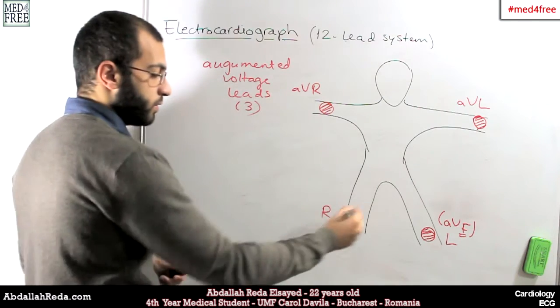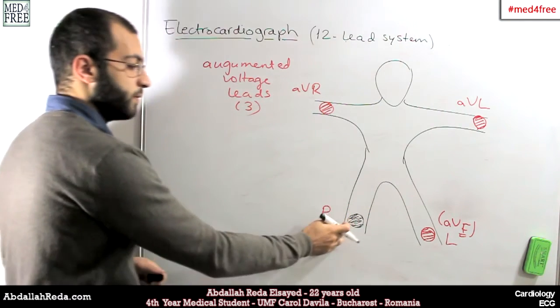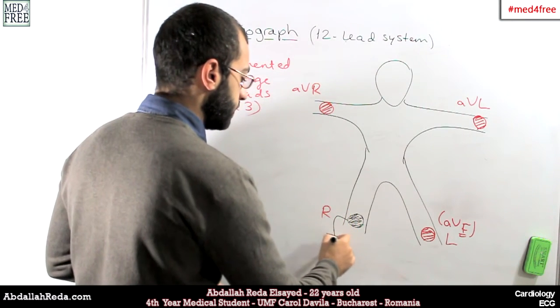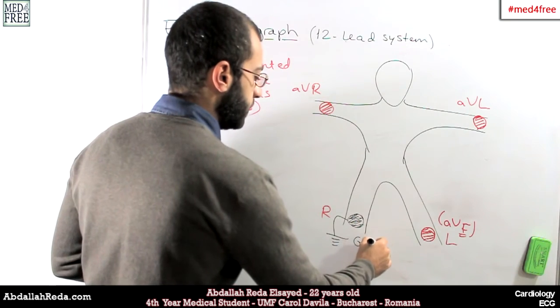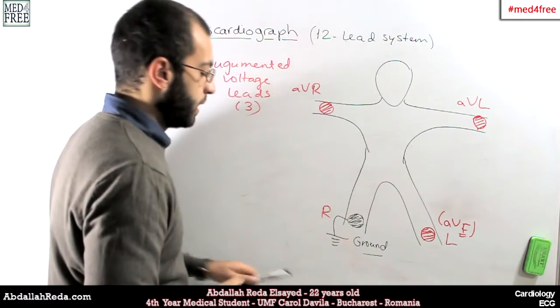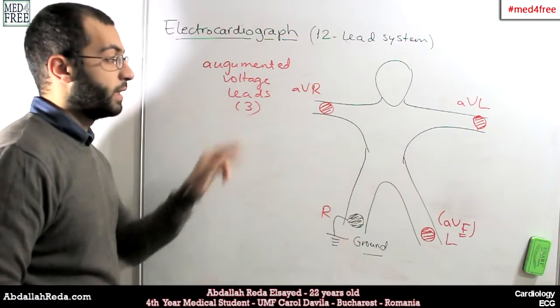On the right foot, we have also a lead, which is the first one, but we don't count it because this one is the ground. So it doesn't transmit electrical information about the heart. So those are the first three leads that we have.